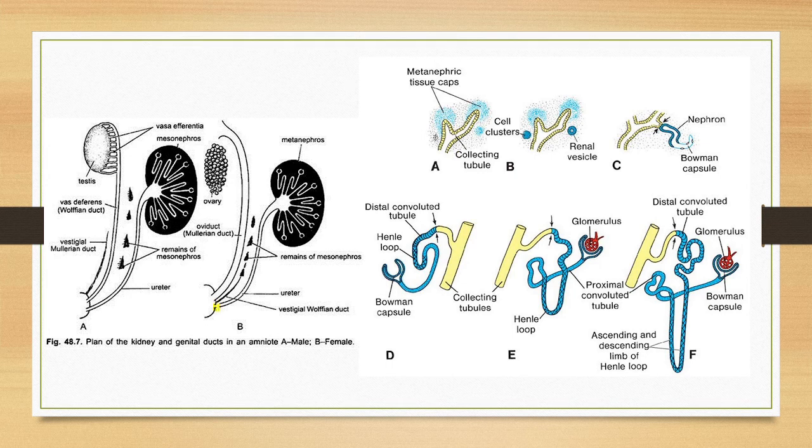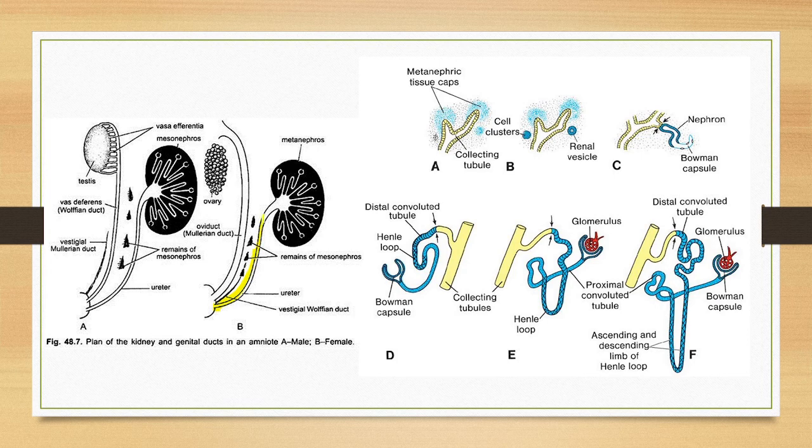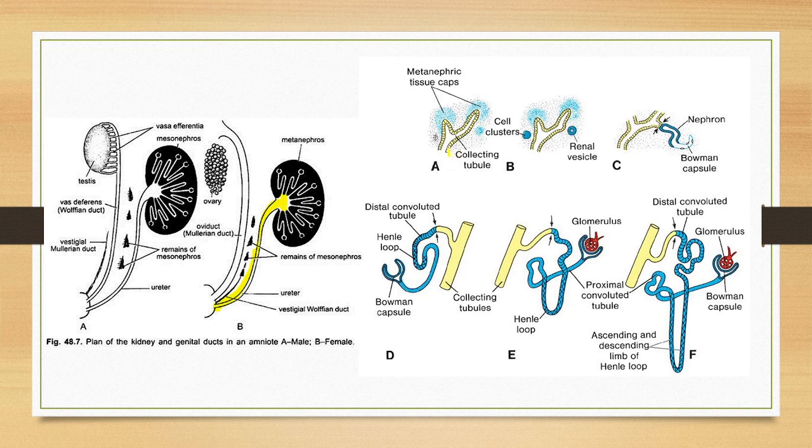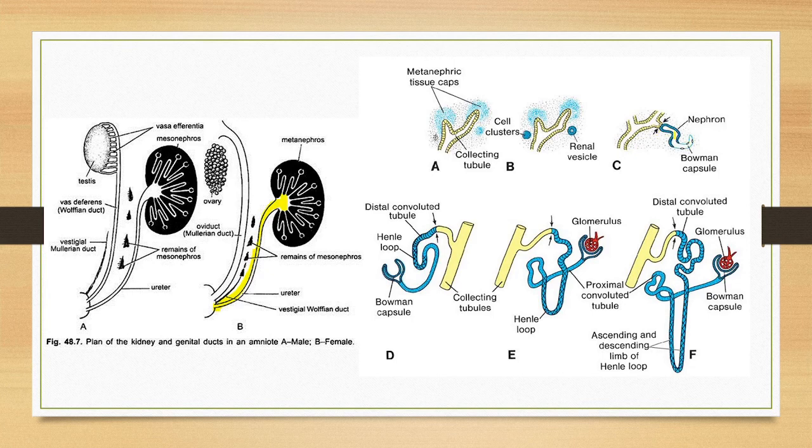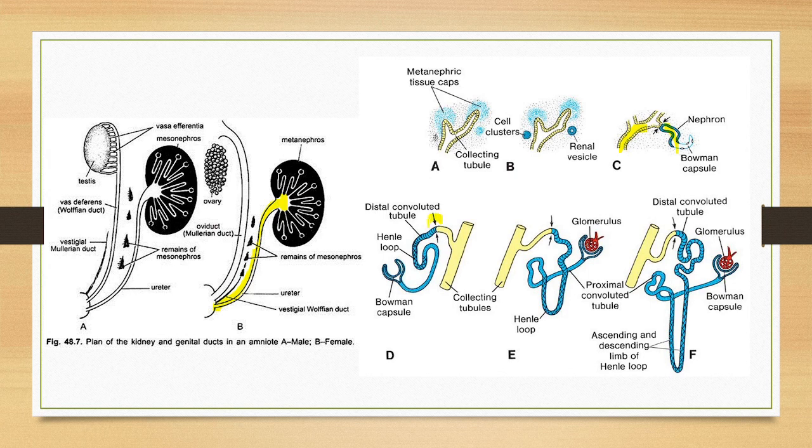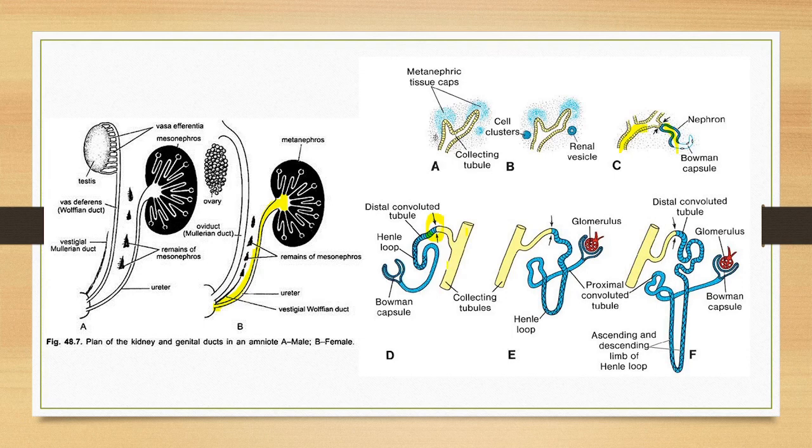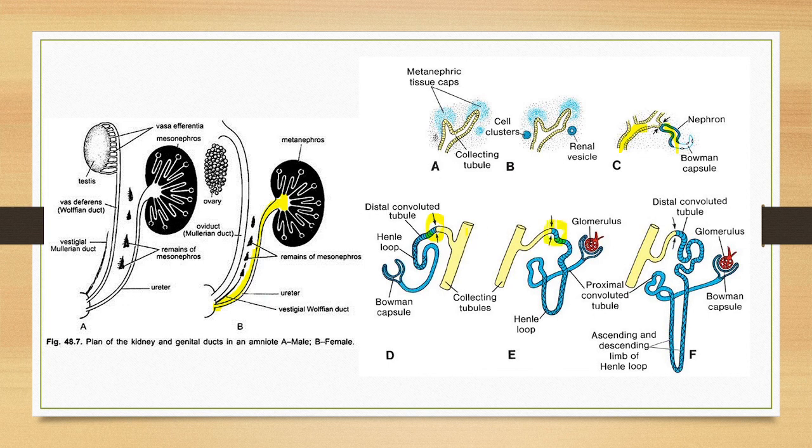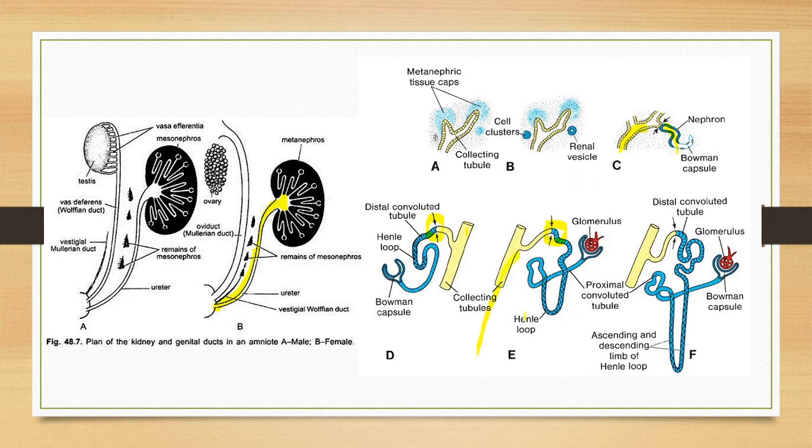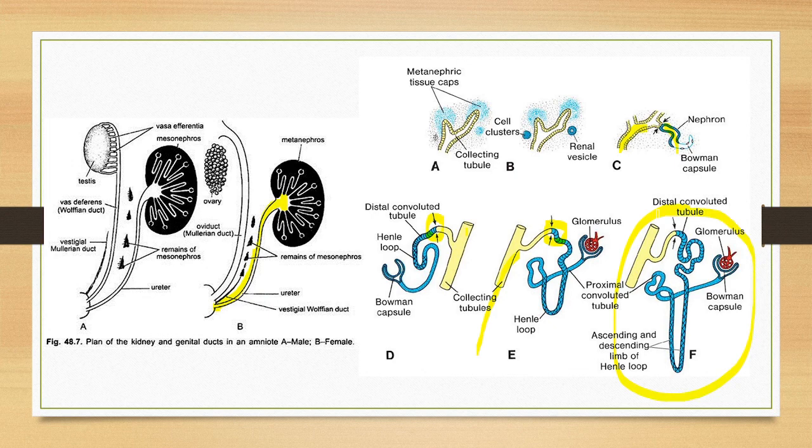This metanephric duct becomes the ureter. It forms the renal pelvis, then the minor calyces, major calyces, and collecting ducts. While this proximal part becomes the ureter, the metanephric duct and metanephric tissue join together to form the complete metanephric kidney that develops.